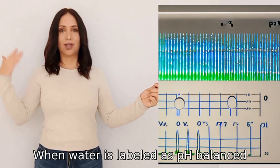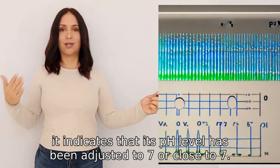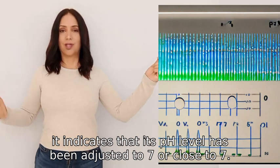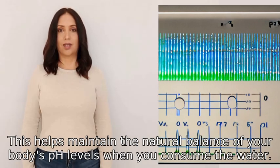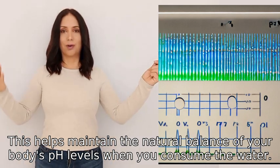When water is labeled as pH balanced, it indicates that its pH level has been adjusted to 7 or close to 7. This helps maintain the natural balance of your body's pH levels when you consume the water.